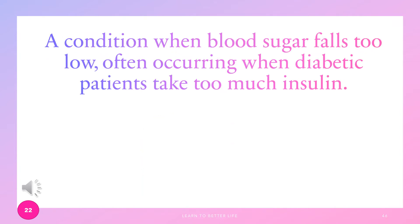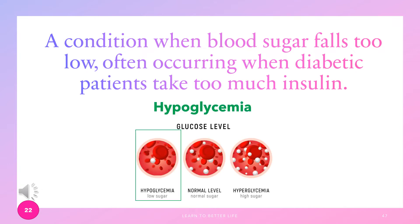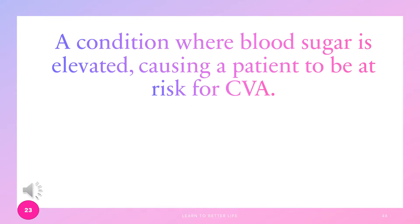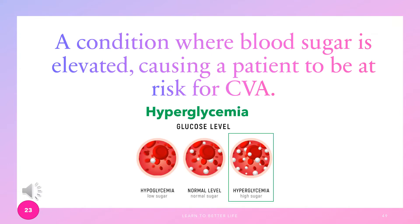What is the name of the condition when blood sugar falls too low, often occurring when diabetic patients take too much insulin? Hypoglycemia. What about a condition where blood sugar is elevated, causing a patient to be at risk for a CVA? That is called hyperglycemia.